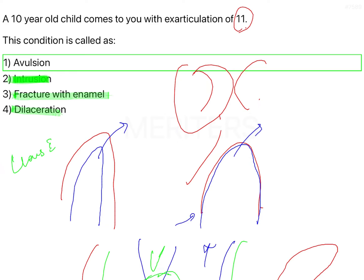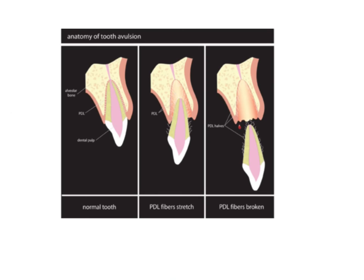Another important problem that can occur with dilacerations is that when you are extracting it from the socket, it can be difficult to remove the root tip and there may be fracture that may occur.